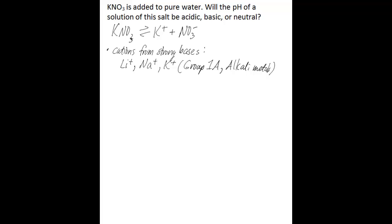Other cations are magnesium, calcium, strontium, and barium. These are all Group 2A elements, or alkaline earth metals.